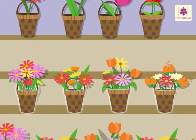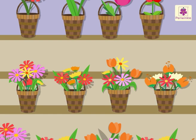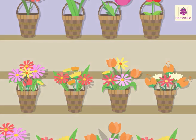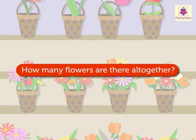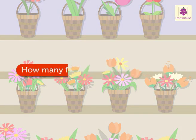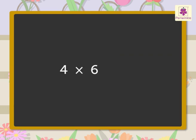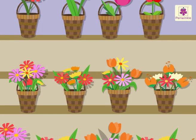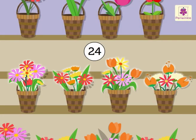There are four baskets. Each basket contains six flowers. How many flowers are there altogether? Four into six is equal to twenty-four. So, there are twenty-four flowers.